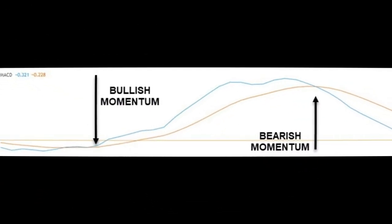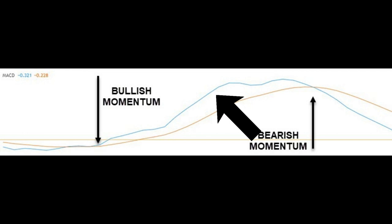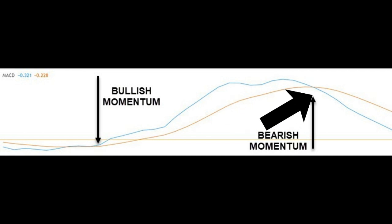Another one is the MACD — two exponential moving averages, one slower than the other. It generates a variety of signals. When the faster average crosses above the slower one, it's a bullish signal. When the faster crosses below the slower, it's bearish.